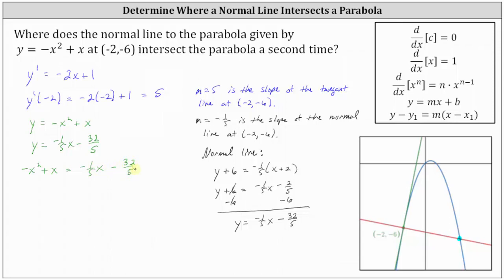Let's set one side of the equation equal to zero by adding x squared to both sides and subtracting x on both sides. On the right we have x squared, and then negative one fifth x minus one x gives us minus six fifths x, and then minus thirty-two fifths. Let's multiply both sides of the equation by five to eliminate fractions. This gives us zero equals five x squared minus six x minus thirty-two.